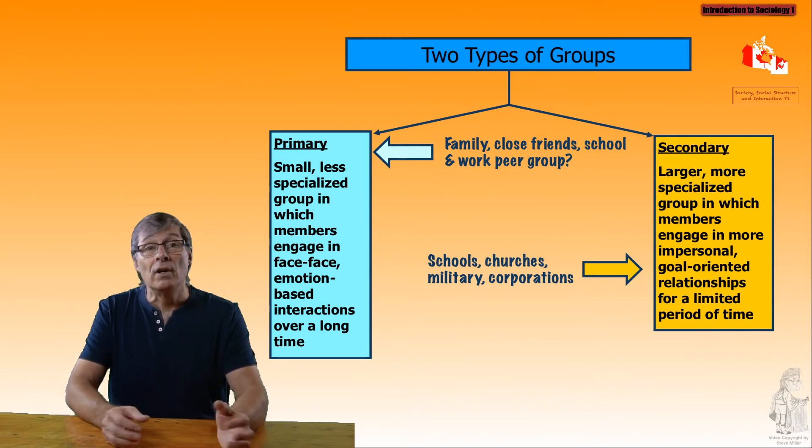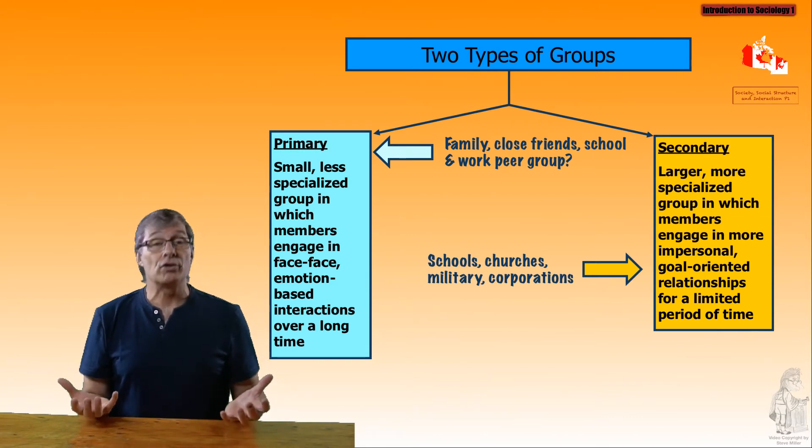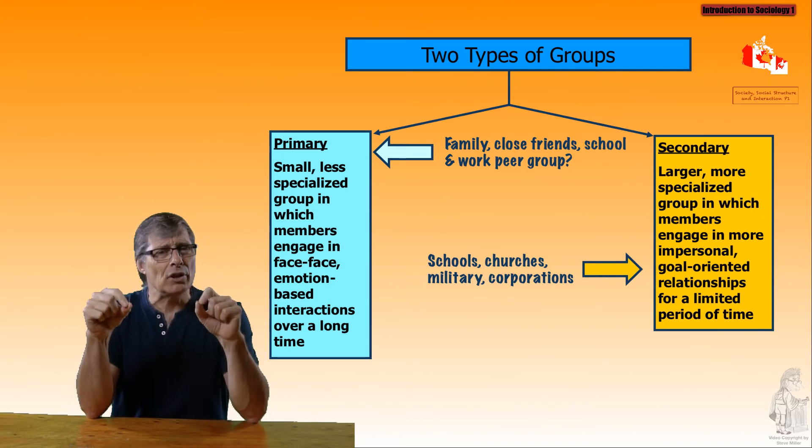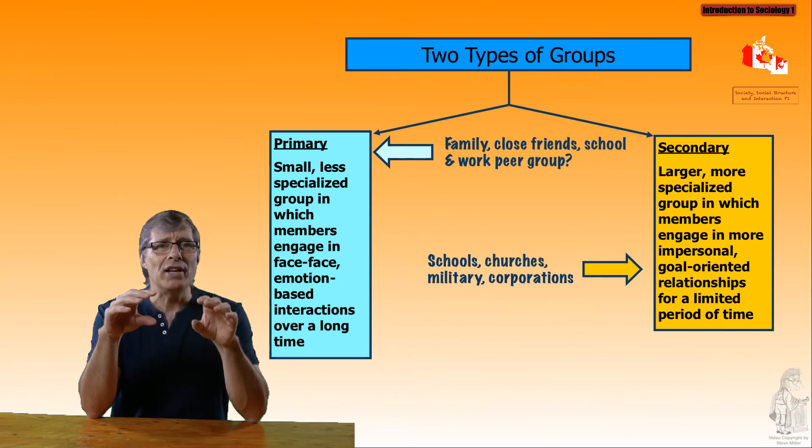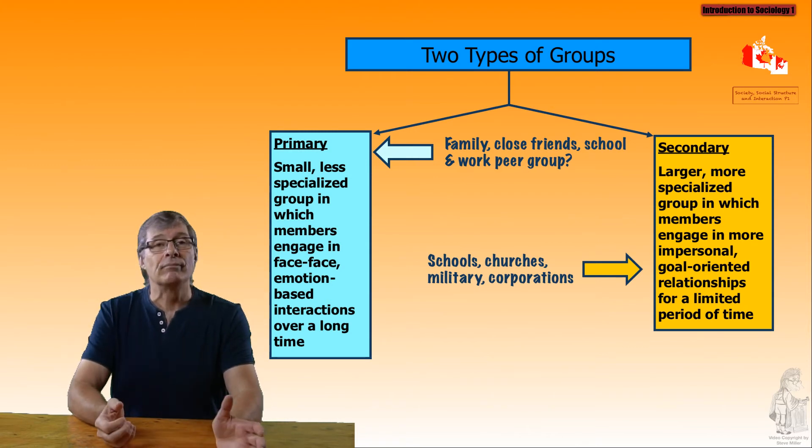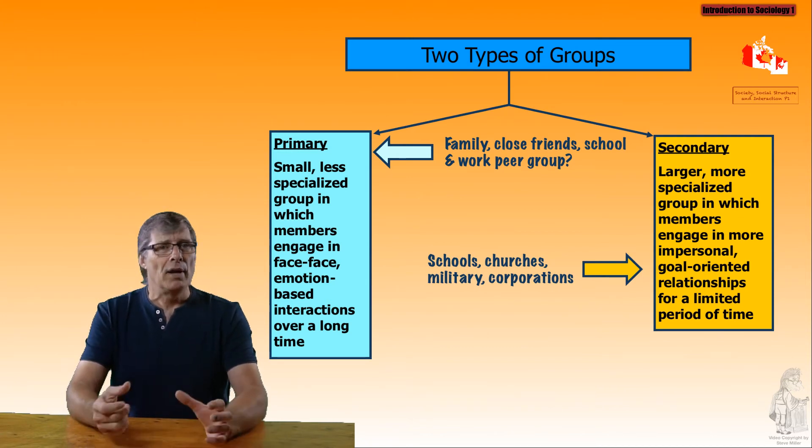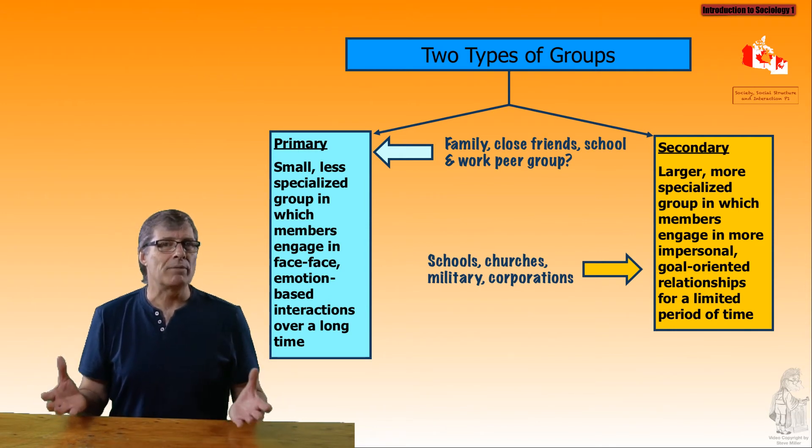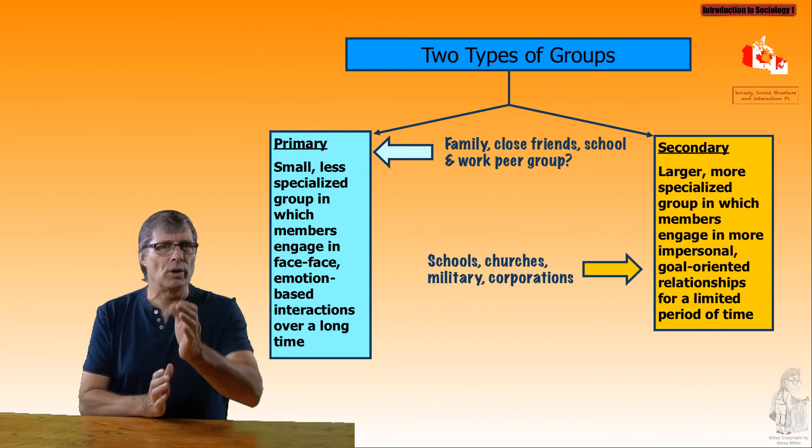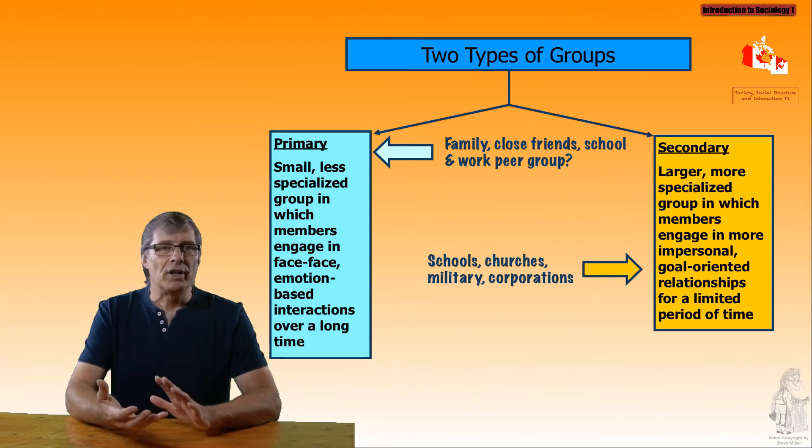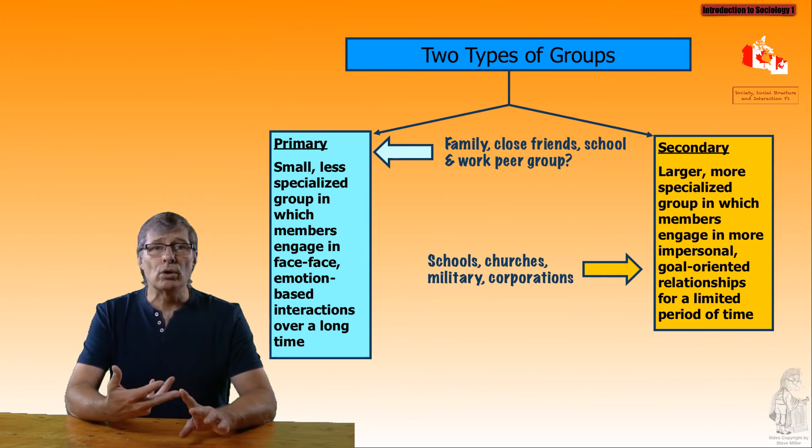Throughout our lives, most of us participate in groups from our family childhood friends to our university classes, our work and community organizations, and even to society. There are two types of groups. Primary group: a small, less specialized group in which members engage in face-to-face, emotion-based interactions over a long period of time. That's often your family. Secondary group: a larger, more specialized group in which members are engaged in more impersonal, goal-oriented relationships for a limited period of time. This might look like your job or workplace. Primary groups include your family, close friends, school or work-related peer groups. Schools, churches, and corporations are examples of secondary groups.